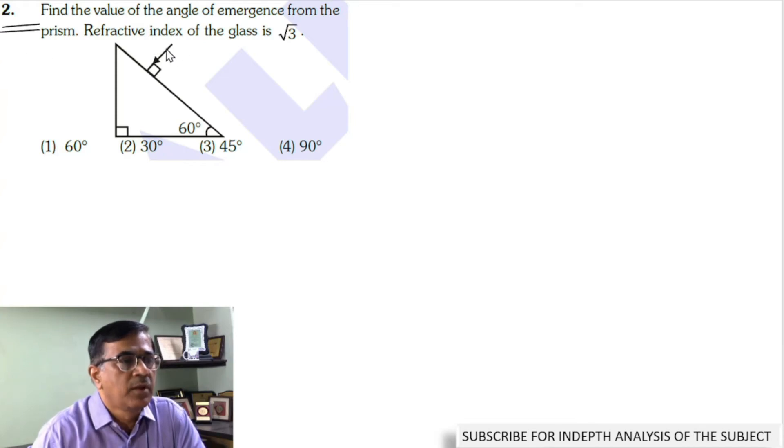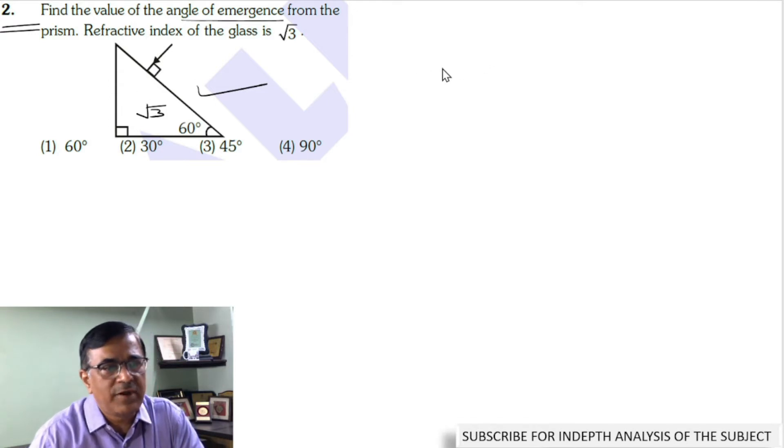In question number two, a ray of light is incident normally on the hypotenuse of a right-angle prism as shown in the diagram. The refractive index of the prism is √3, and we are supposed to find the angle of emergence. For your benefit, I would like to draw a diagram.